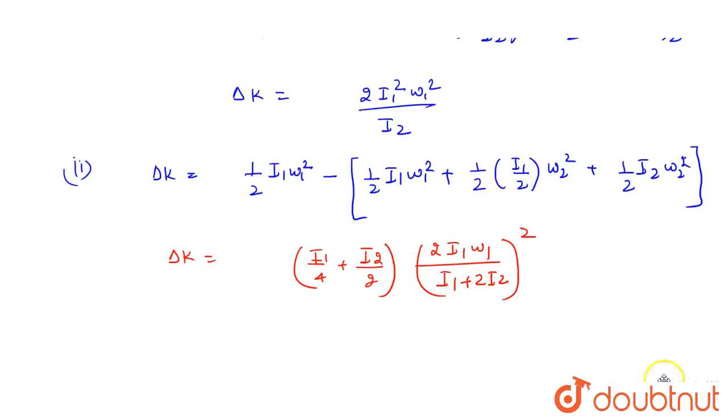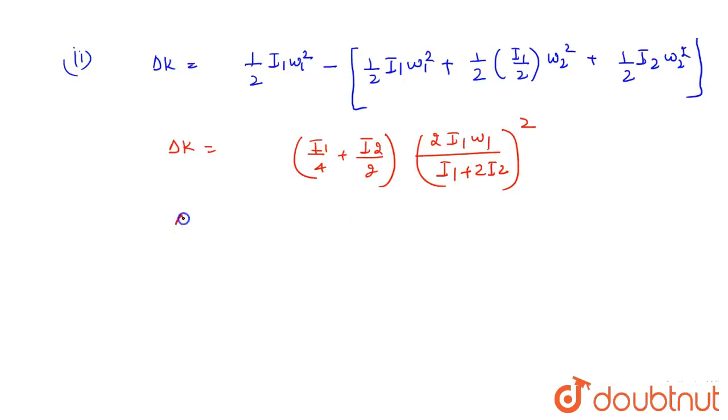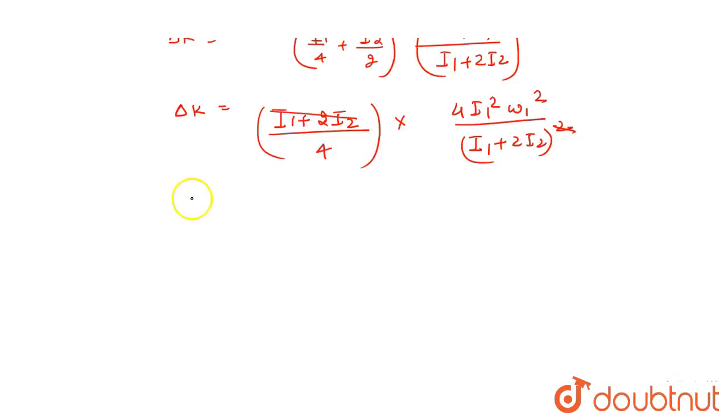So we have delta K value which will be: delta K equals, we can change this, this will be 2 times i2 divided by i1 plus 2i2 divided by 4 whole multiplied by 4 times i1 squared omega1 squared divided by i1 plus 2i2 whole squared. So one power cancels. The final value of delta K equals 4 cancels, so i1 squared omega1 squared divided by i1 plus 2i2.